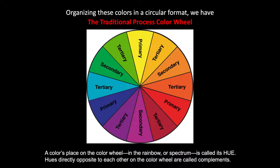This simple color wheel is organized into a series of flat colors. You are also familiar with color wheels that are organized into infinite gradations of colors, like the ones you may find in your color picker in a paint program such as Illustrator. A color's place on the color wheel — which accords with its place in the rainbow or in the spectrum — is called its hue.